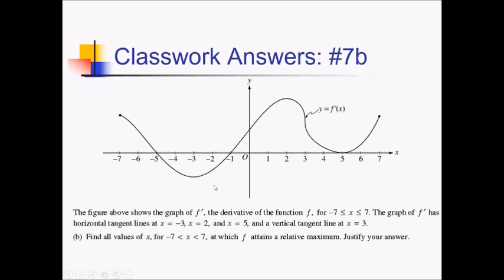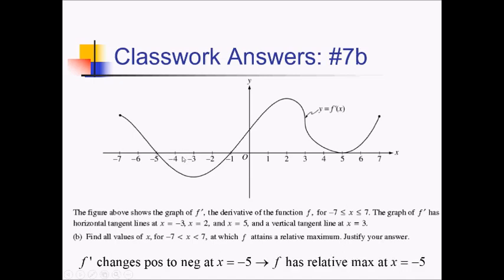For this next part, we want to know where f attains a relative max. That's going to happen where f prime changes positive to negative. The only place that happens: f prime changes positive to negative at x equals negative five. Therefore, f has a relative max at x equals negative five.